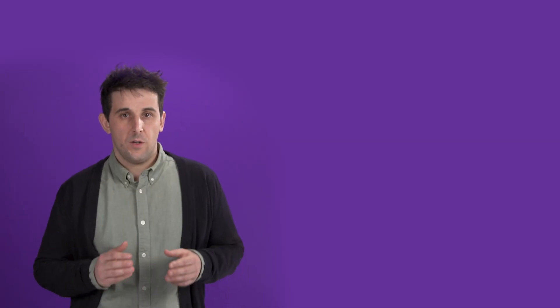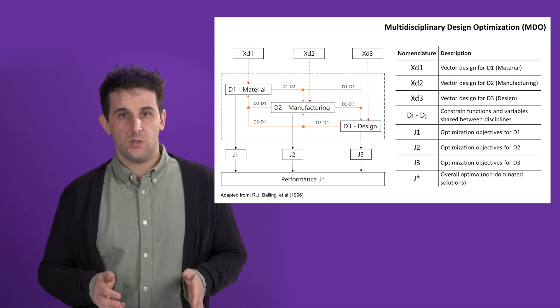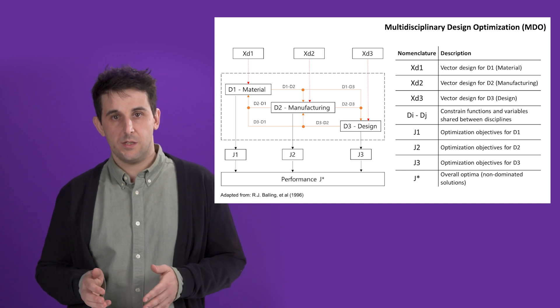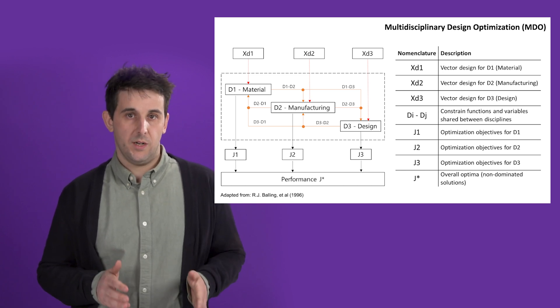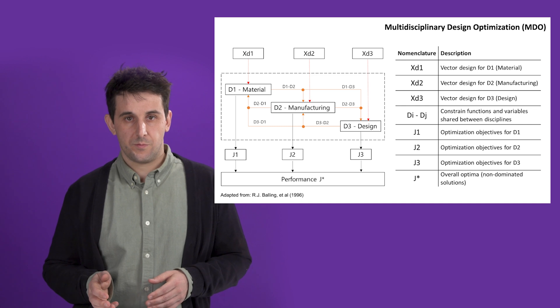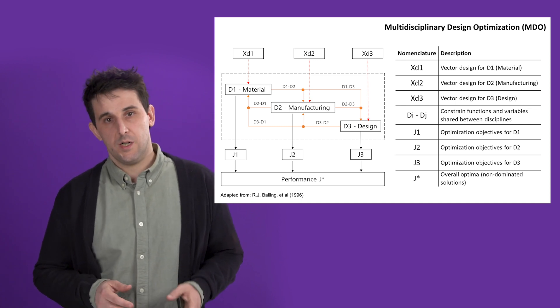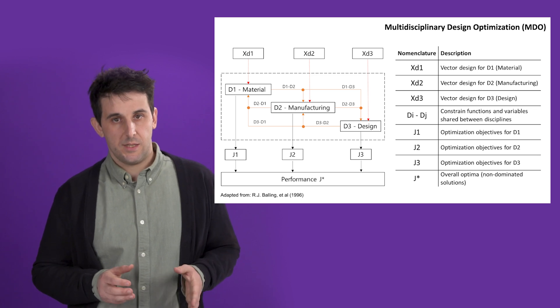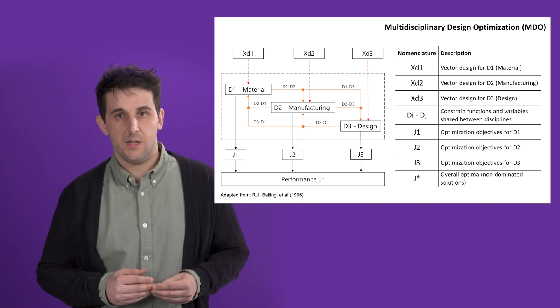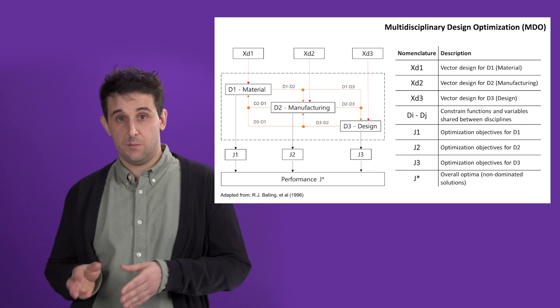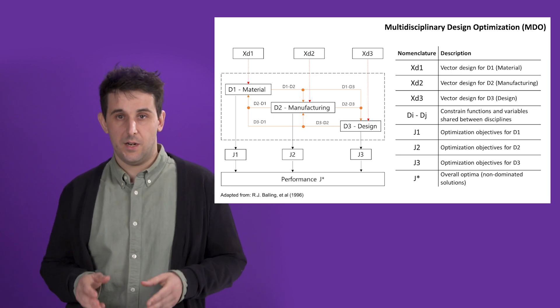Unknowingly, they generate side effects that other disciplines have to absorb, usually to the detriment of the overall system performance. On the other hand, a horizontal design approach decomposes concurrent engineering disciplines to construct a multidisciplinary design problem formulation. The primary motivation for using multidisciplinary design optimization is that the performance at system level is driven not only by the performance of the individual subsystems, but also by their interactions.